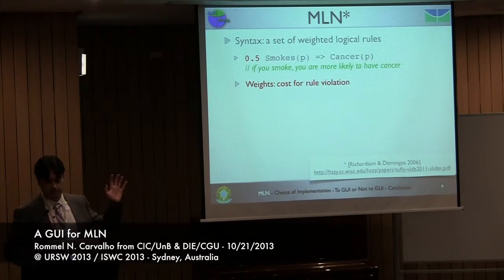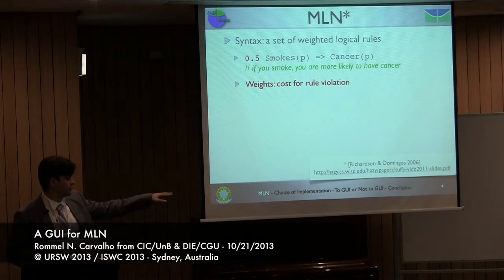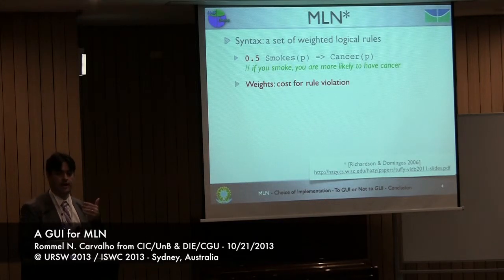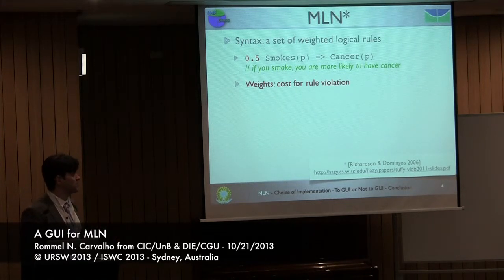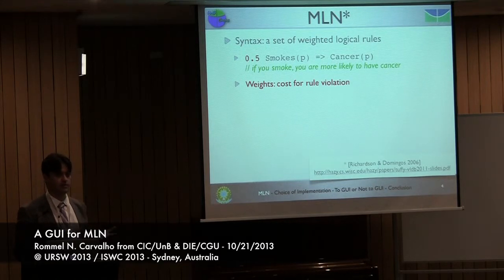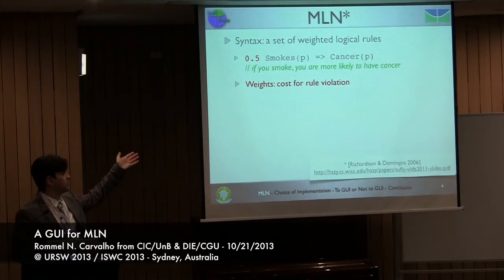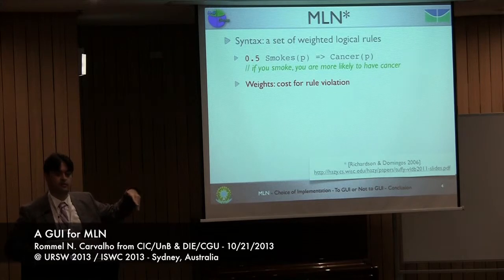This example is taken from Domingo's work and also from the presentation given by Tuffy, which is the reasoning tool we use behind the scenes. We created the GUI for the Tuffy API. Basically, when talking about Markov Logic Networks, what we have is rules and weights associated to the rules. The weights are pretty much the cost of violation of that rule.